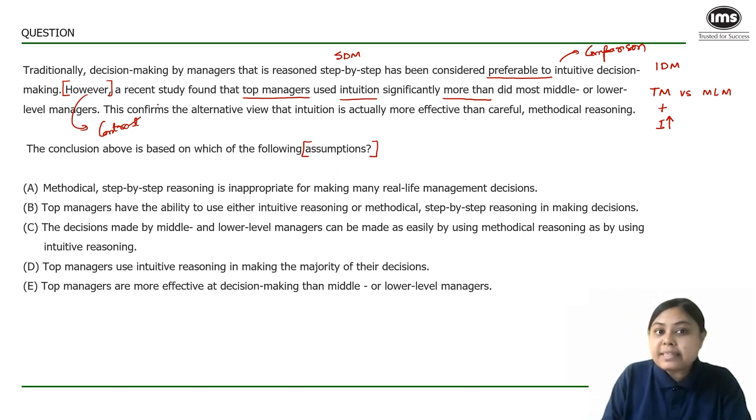Now based on this recent study my writer says this confirms the alternative view. What can be the alternative view? Alternate to the traditional view. That intuition is actually more effective than careful methodical reasoning. The moment I read this line I realize that this is the conclusion of the author. This is what my author wants to conclude.